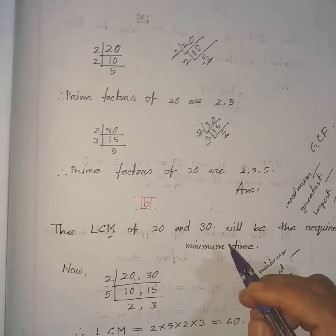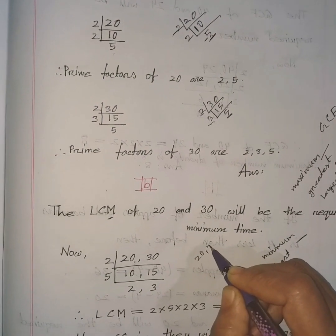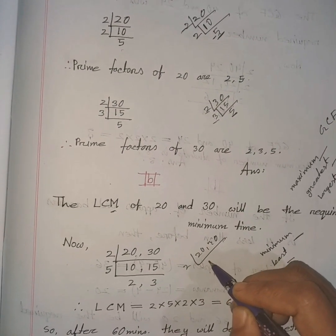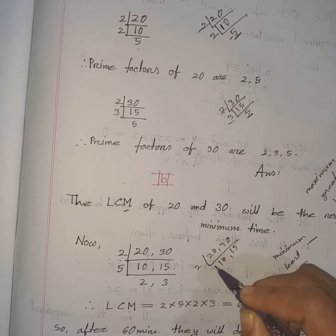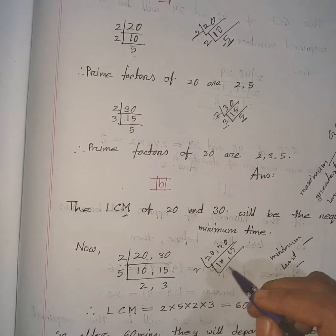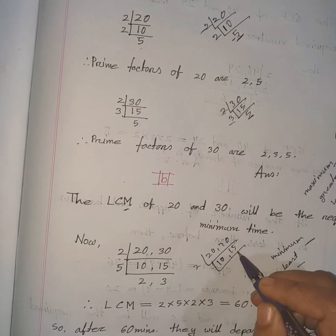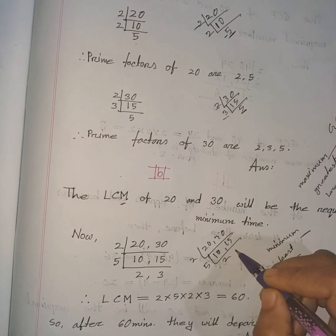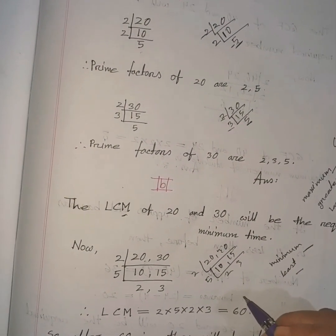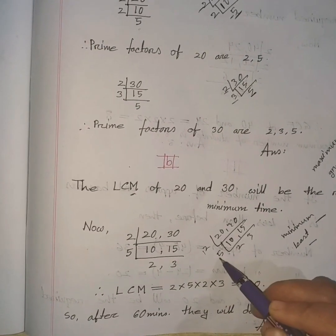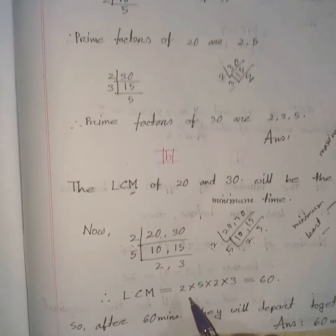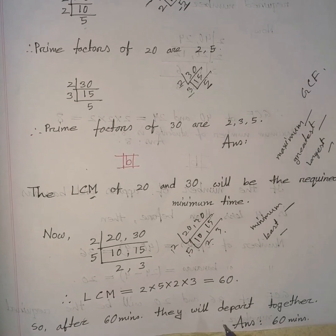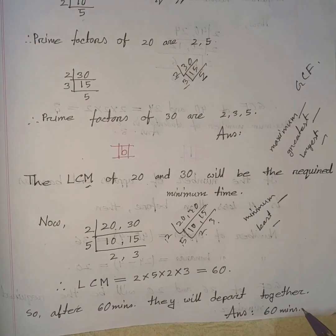Now, we write 20 and 30. Both are even numbers, so we divide by 2. Dividing 20 by 2, we get 10; dividing 30 by 2, we get 15. Next, 5 is common to both 10 and 15, so we divide by 5. Dividing 10 by 5, we get 2; dividing 15 by 5, we get 3. The LCM is the product of 2 × 5 × 2 × 3 = 60. So after 60 minutes, they will depart together. Hence, the answer is 60 minutes.